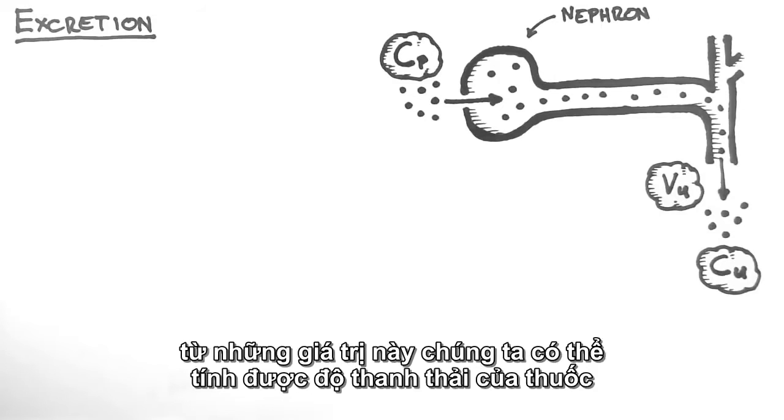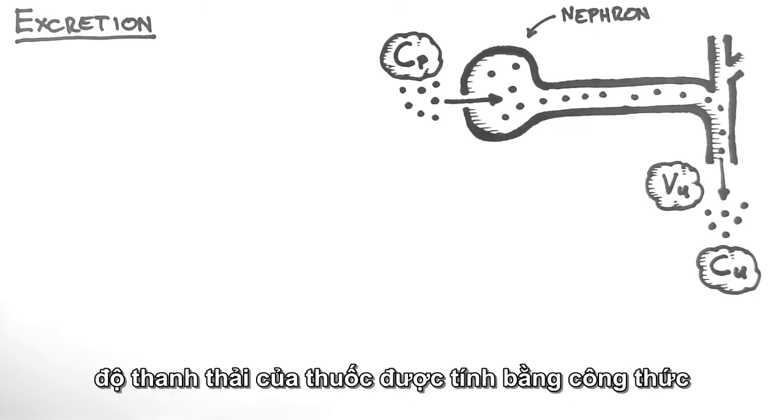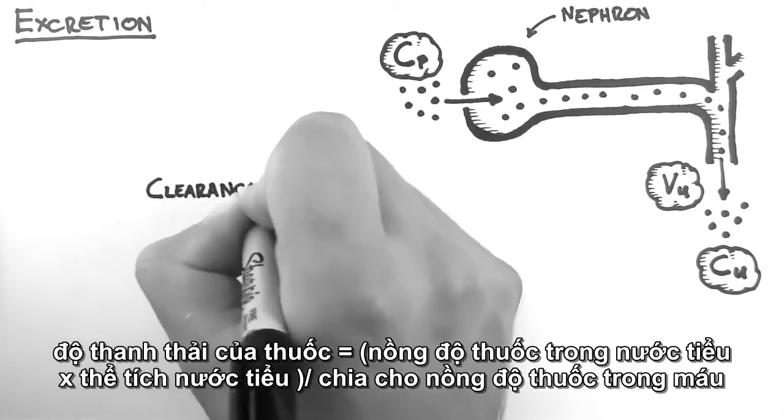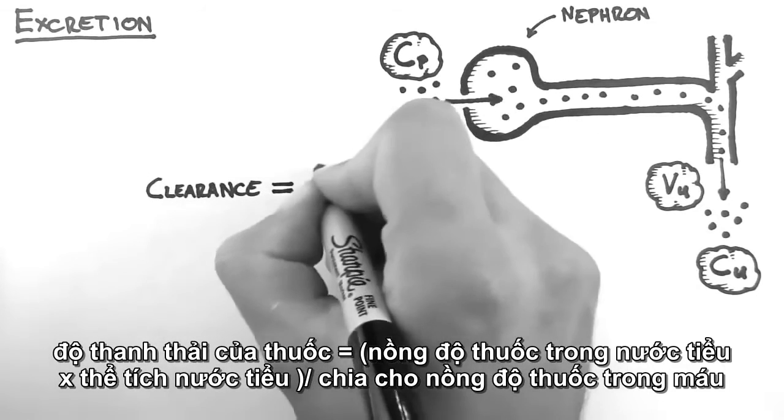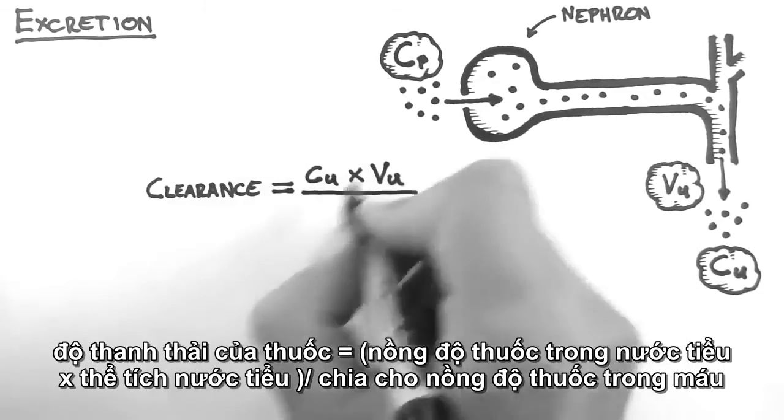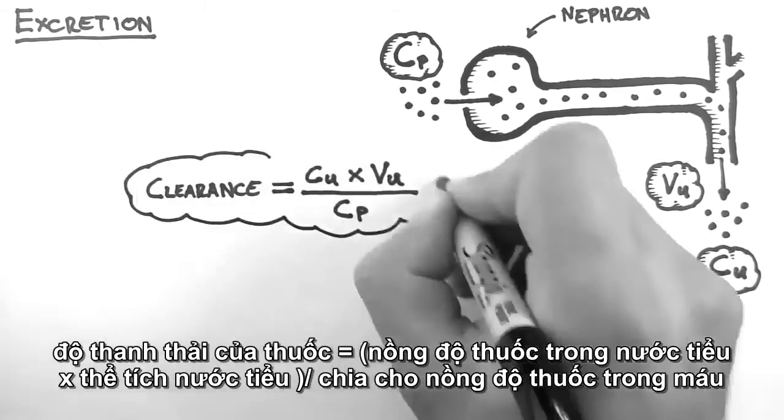From these values, we can determine the clearance of a drug. The clearance of a drug is given by this formula. Clearance equals the concentration of a drug in the urine times the rate at which the urine is being produced divided by the concentration of drug in the plasma.